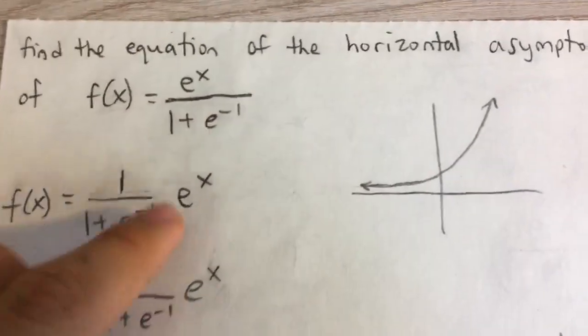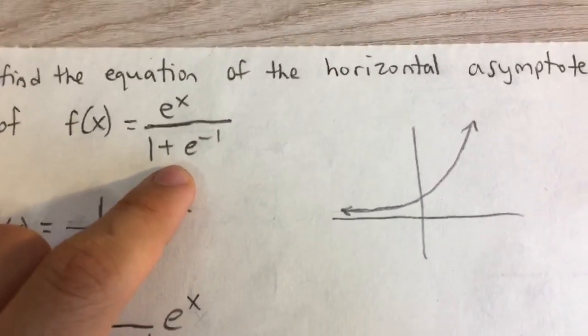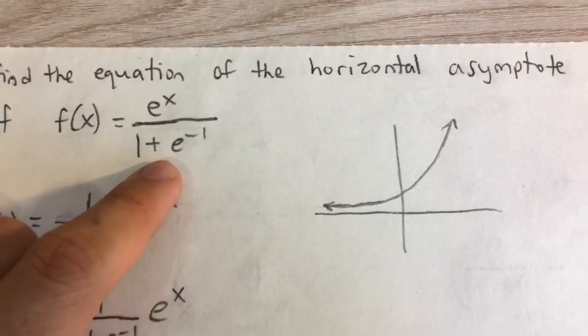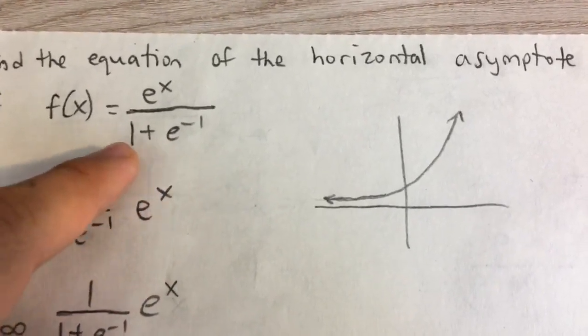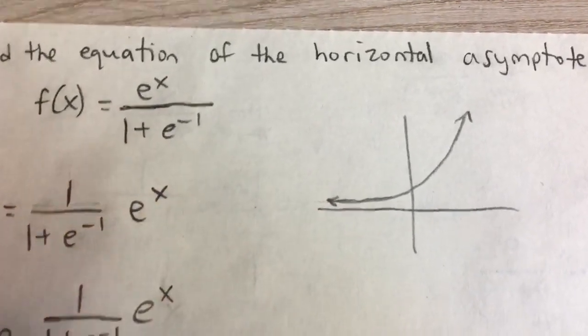So first off, let's take a look. What is this function? We're trying to find the horizontal asymptote, which is the end behavior of a function. It's the value that a function approaches as it goes to either positive infinity or negative infinity.